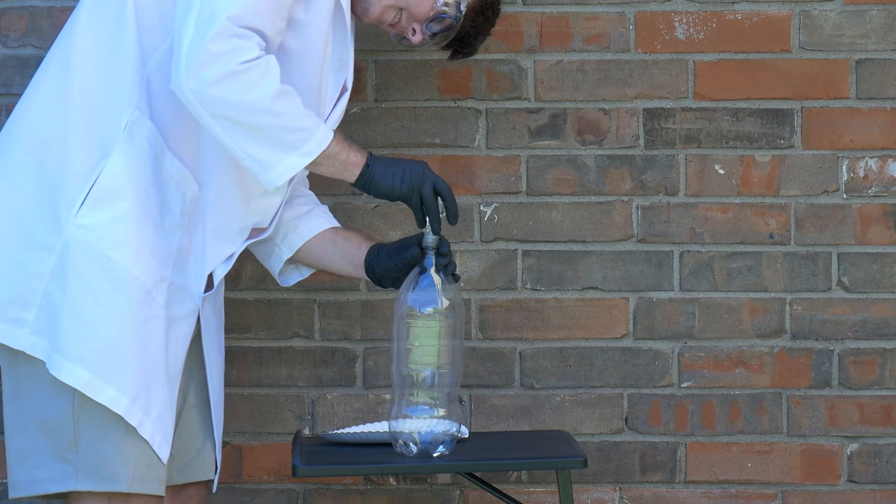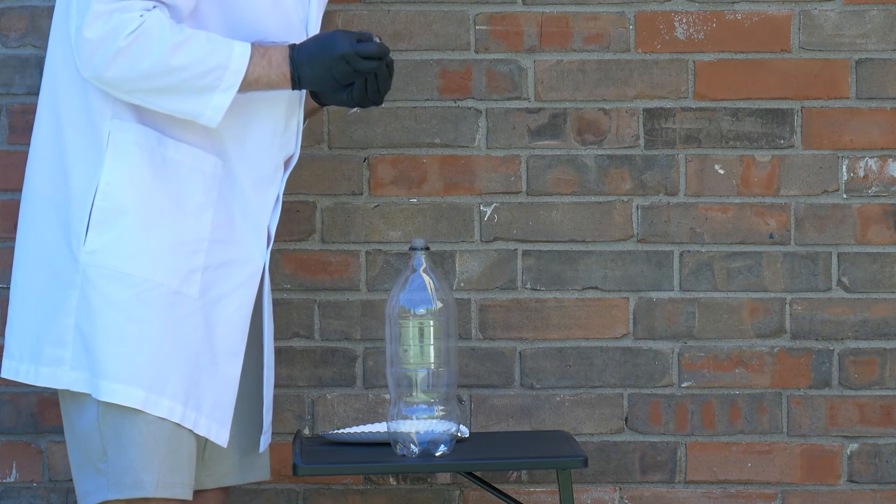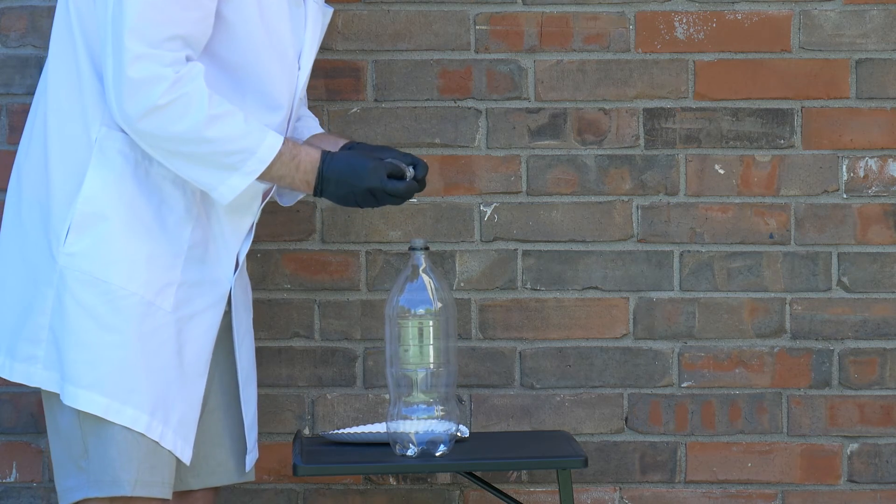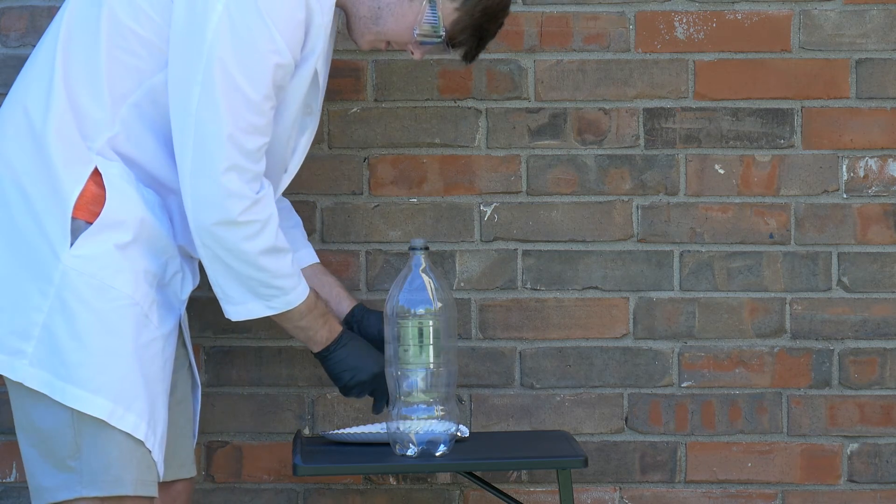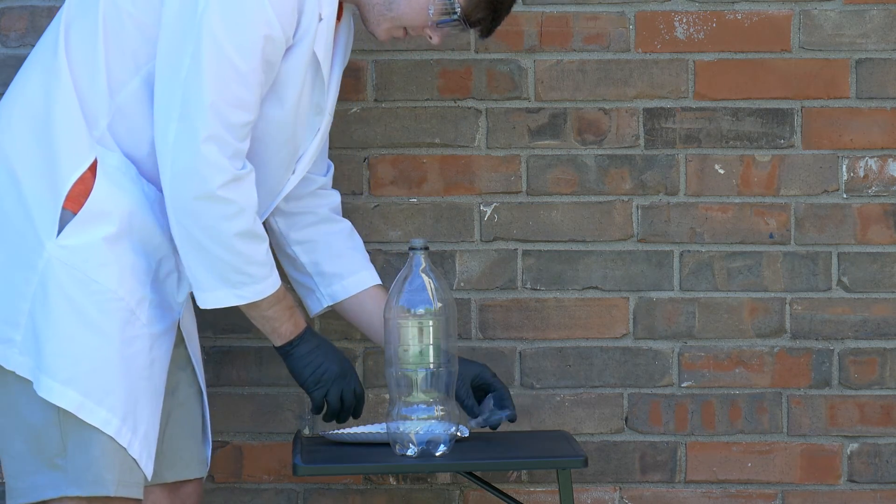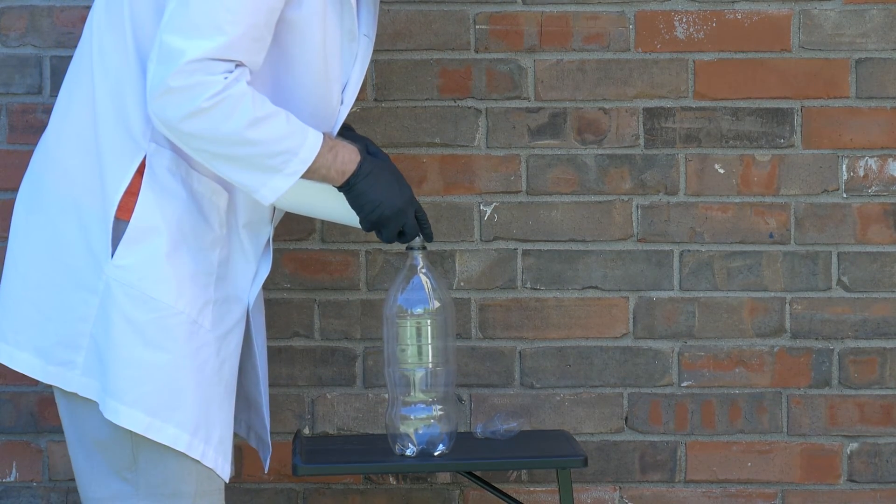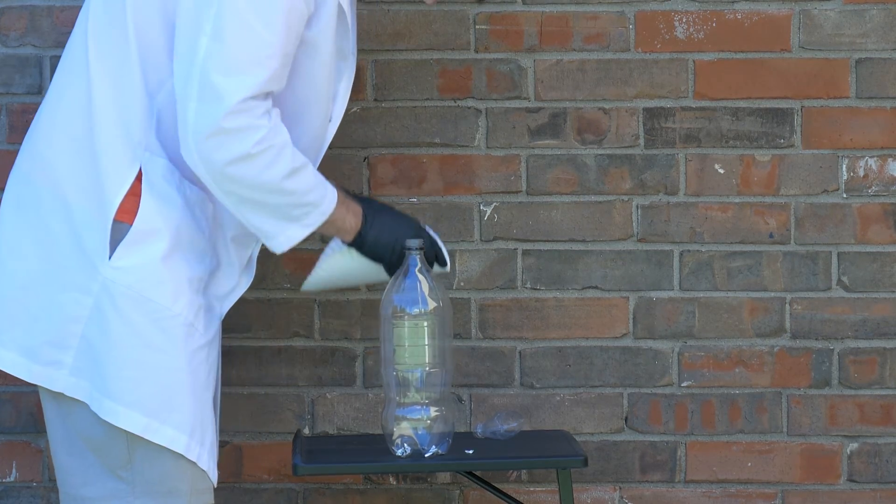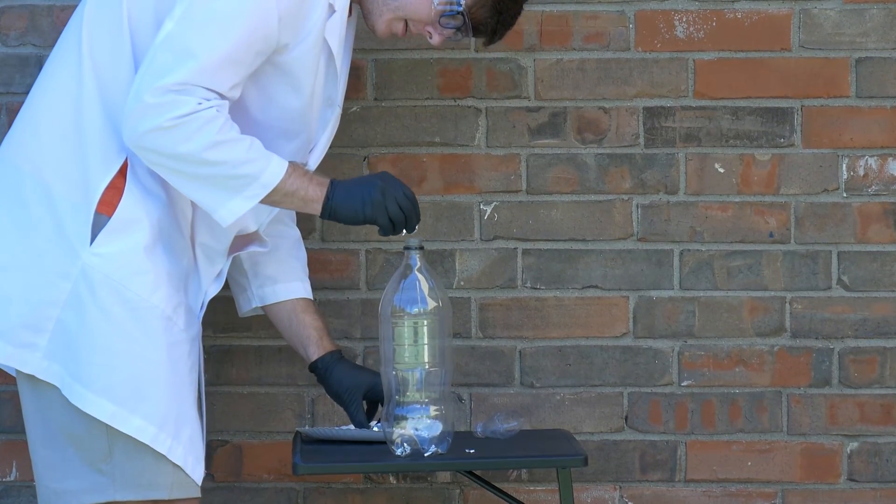Alright, that pretty much brings us to the end of this video and to this process. There are many different things looking back on it that I could have improved on. One I'd say easily was that the aluminum pieces were too big the first time I tried. It's definitely worth your time to try to use a shredder or just scissors and be more careful and make the aluminum pieces much much smaller.